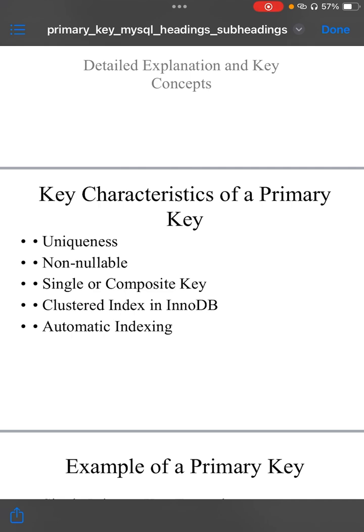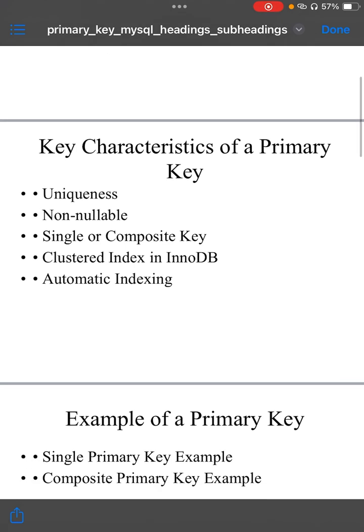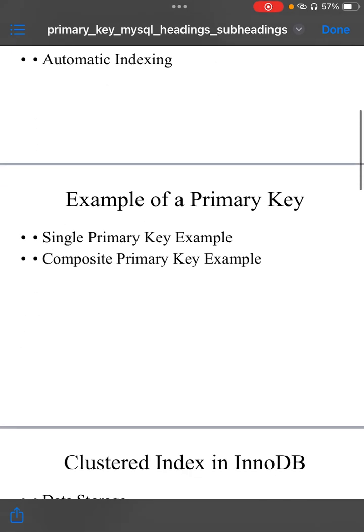Automatic indexing. MySQL automatically creates an index for primary key to ensure that lookups are fast. This index makes retrieving rows by primary key more efficient because the database engine does not need to scan the entire table. Example of primary key: it can be single primary key or composite primary key.